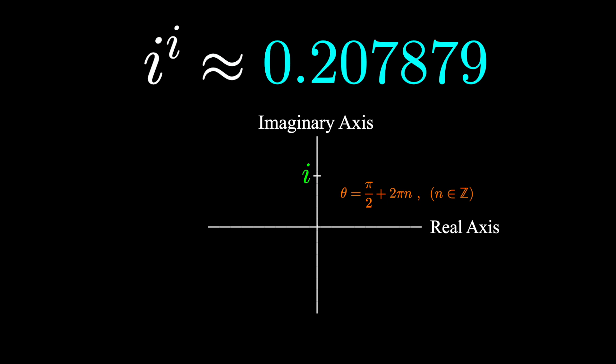But we often restrict our discussion to a single interval, and when someone says i to the i, they usually mean this value is about a fifth. But if you thought this was interesting, you're really going to enjoy this video on imaginary numbers. Go check it out right now. I'll see you in that one.